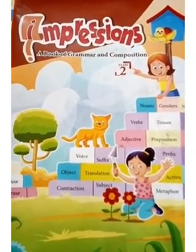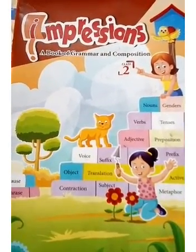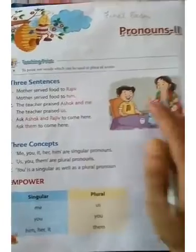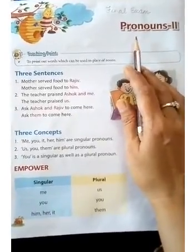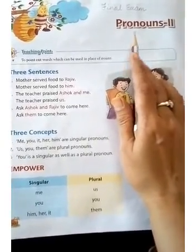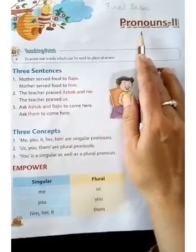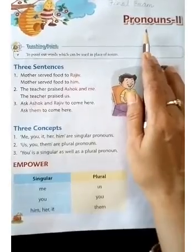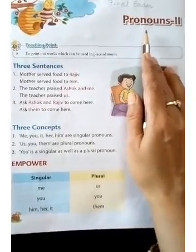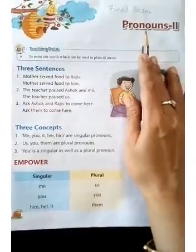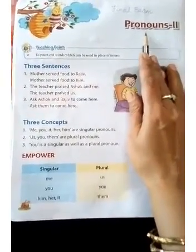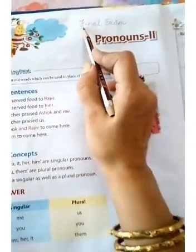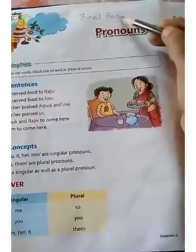Good morning children. Please open up your English language reader book on page number 50. Now in the previous video, children, we had learnt about pronouns. What is a pronoun? A pronoun is a word that takes the place of a noun or nouns in a sentence. Now here are some more pronouns which you will learn. Please write on the top of the page: final exam.